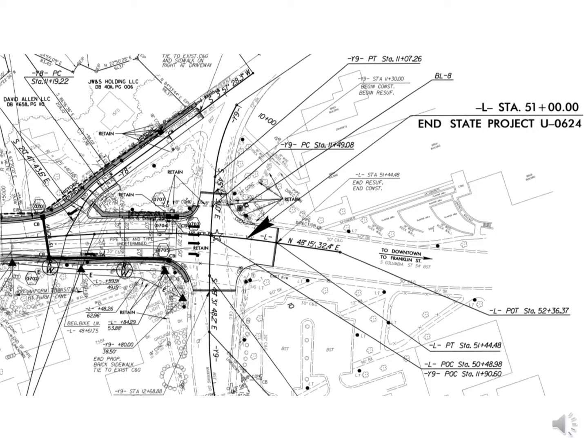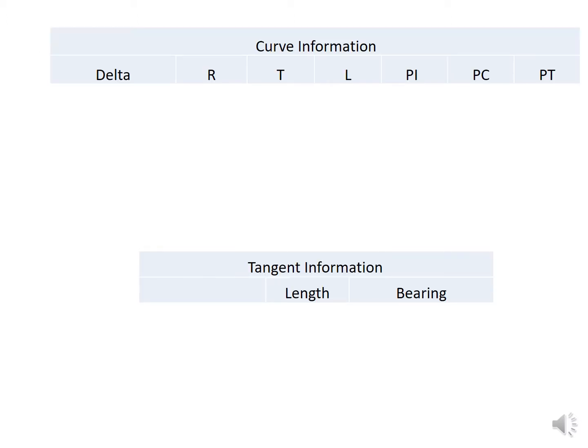Moving to the end of the project, we have where the station ends. The overall project has a final station of 51, but looking closely we can see that the PT of the final curve ends at station 51 plus 44.48, and that's going to be the end of resurfacing and end of construction for this project.